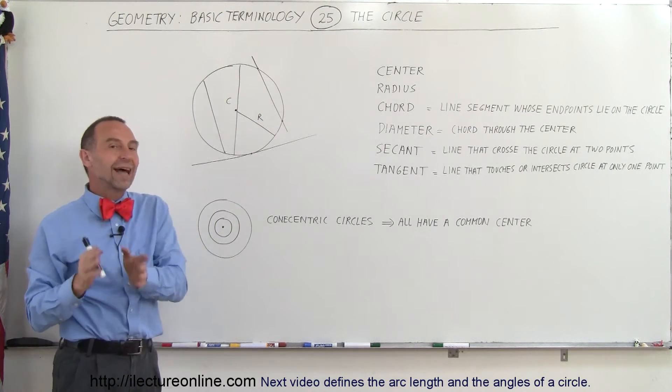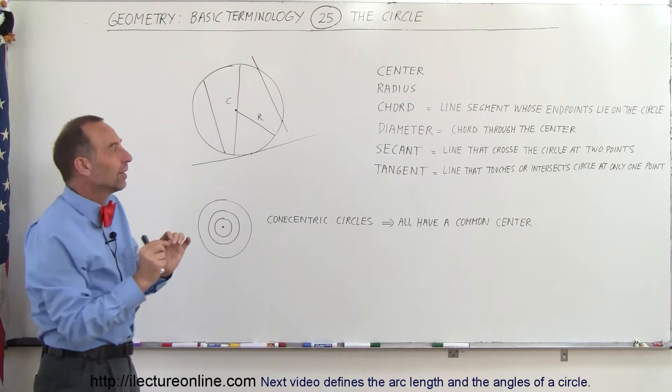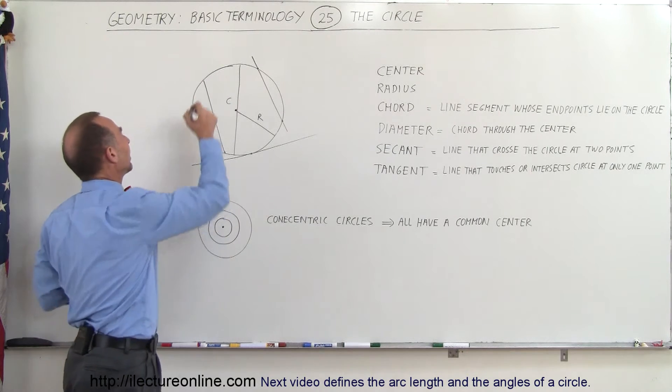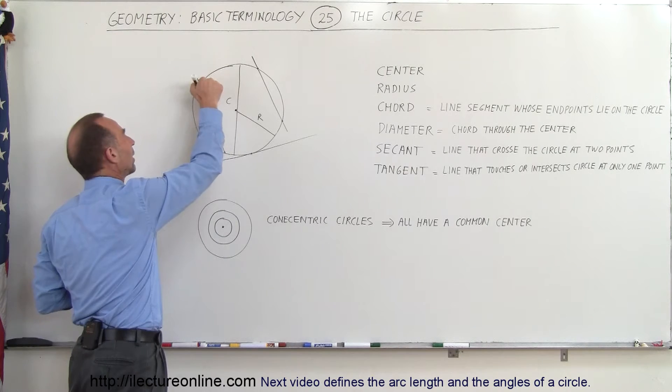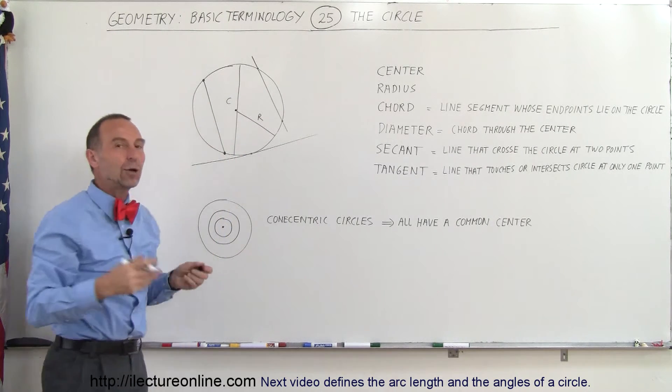A chord is a line segment whose endpoints lie on the circle. So let's say here we have an endpoint right there on that line segment. It's right on the circle. There we have another endpoint. So this line here represents a chord.